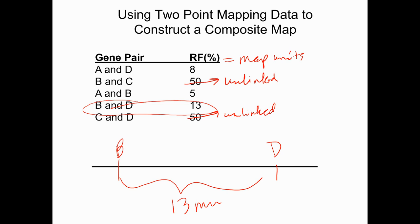So A to D is eight, and A and B is five, so it makes sense to put A right about here. Now, when you first just look at A to D, A could also be over here, but then you realize that doesn't work when you look at the other piece of data. So this piece is five, and this piece is eight, and those pieces add up to a total of 13 map units. So then that's your map.